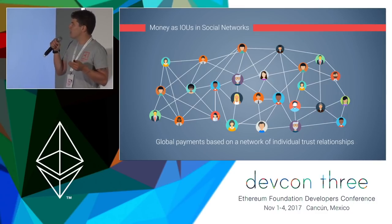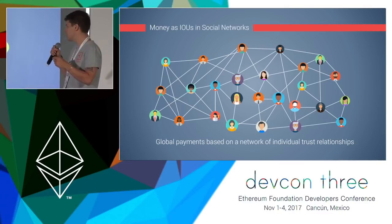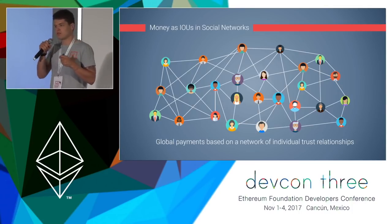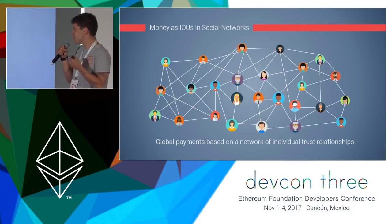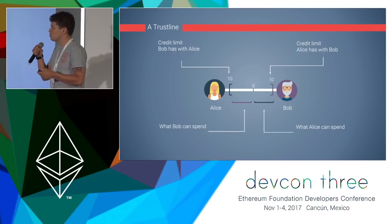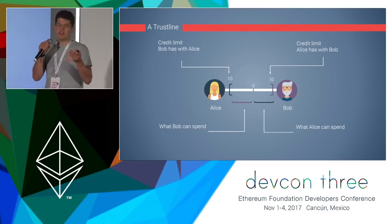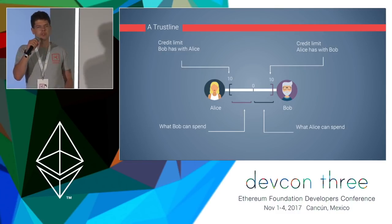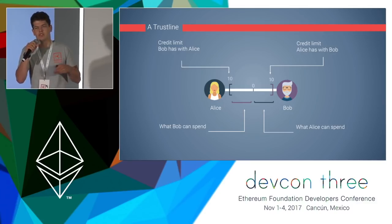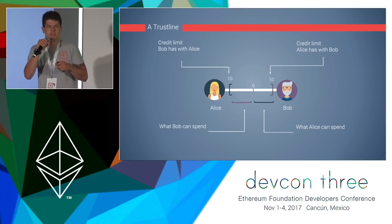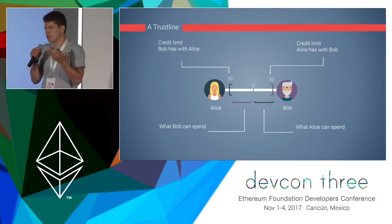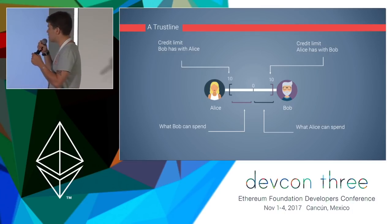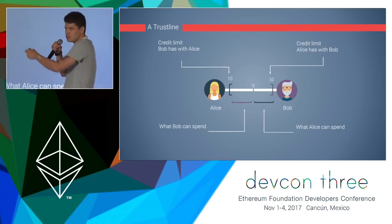One way to do this is if we took money as IOUs and implemented it on social networks, issuing it in individual trust relationships. We use these trust relationships to make payments, creating a global payment network — the original Ripple idea from 2004 by Ryan Fugger, not what Ripple is doing nowadays. These are individual trust relationships between people who know and trust each other, and they issue each other credit lines. A trust line consists of two credit lines with a credit limit and a balance indicating how much was spent.